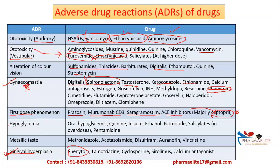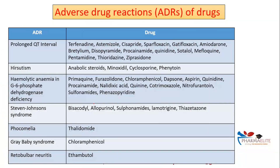For hypoglycemia (drop in blood sugar), relevant drugs include oral hypoglycemic agents, insulin, quinidine, salicylates in higher doses, and pentamidine. Metallic taste is classically associated with metronidazole, acetazolamide, disulfiram, vincristine, and olanzapine. The important ones from this slide are five key drugs — the rest are not as critically important. Phenytoin classically causes gingival hyperplasia and hirsutism.